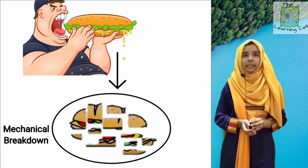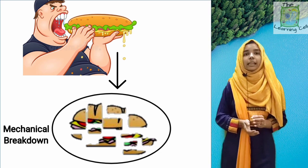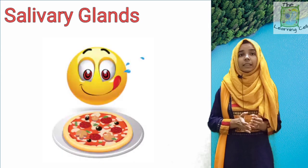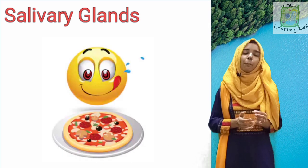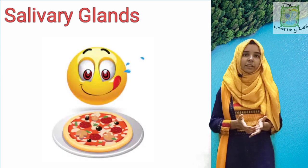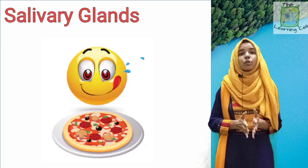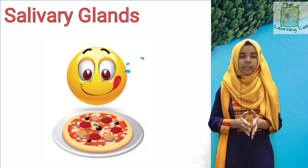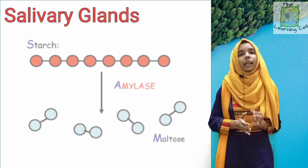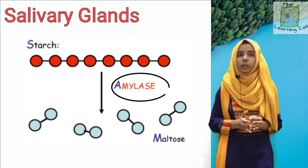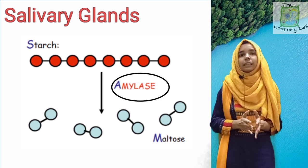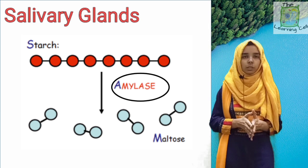Coming to our second structure, which is salivary glands, they are very important. Whenever we eat or smell food that we feel good about, our mouth waters. This water is actually saliva which is secreted by these salivary glands. This saliva contains an enzyme which is known as salivary amylase or ptyalin. Salivary amylase converts the starch present in our food into maltose.